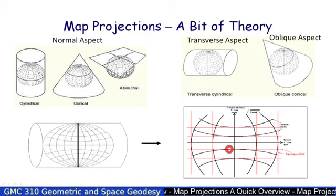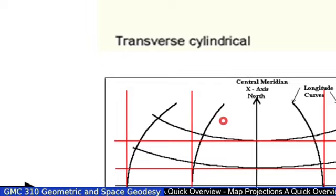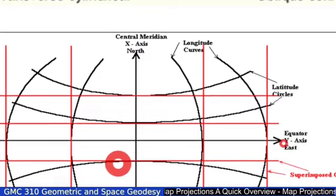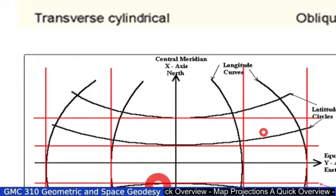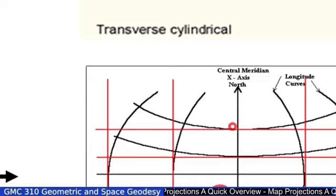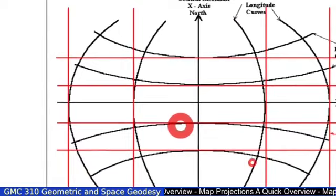Which then looks like this, where you've got a central meridian which is the x-axis, and you've got the equator which is normally the y-axis. And then you've got longitude curves and latitude circles. Those are actually segments of circles. And the longitudes are composite curves. And that's specifically a transverse mercator projection.